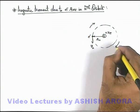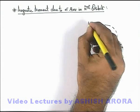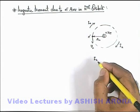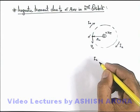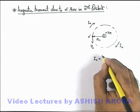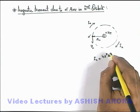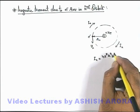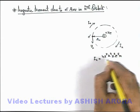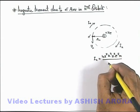Correspondingly we consider a current i-n is flowing in the orbit, and the value of i-n, we have seen that it is given as 4 pi square k square z square e to power 5 m divided by n cube h cube.